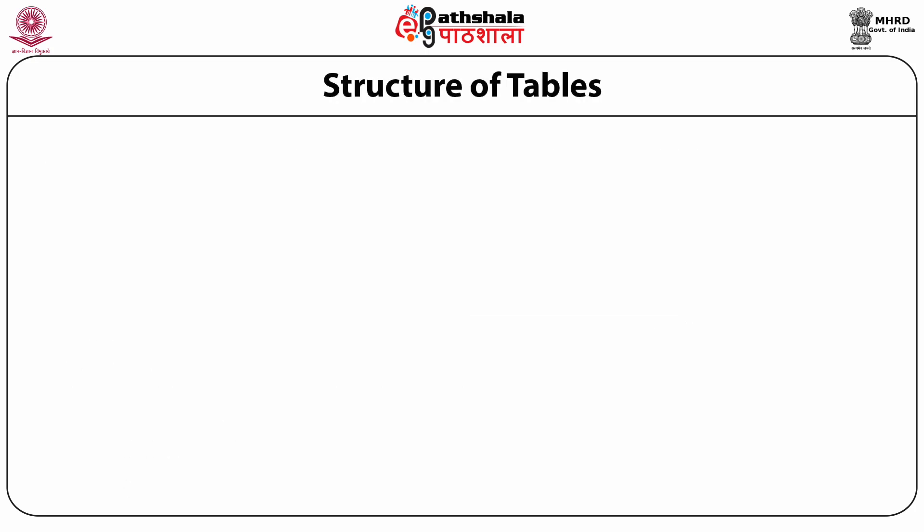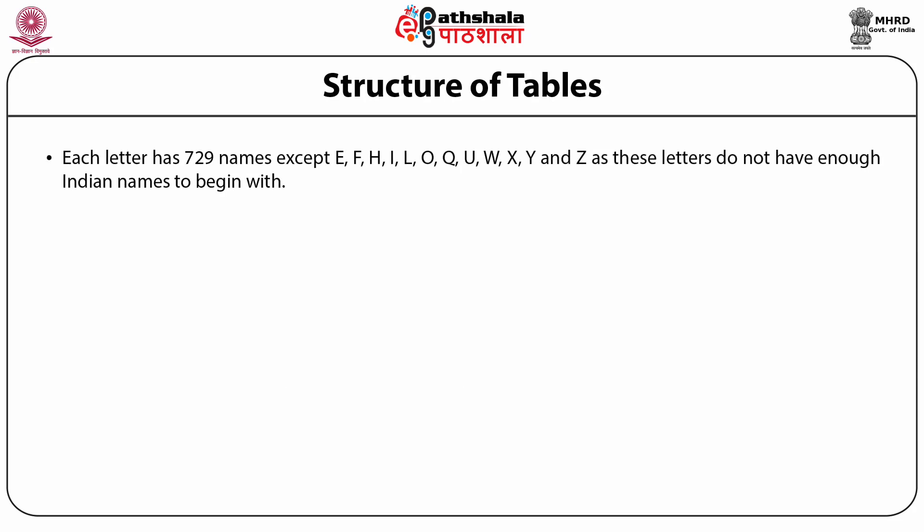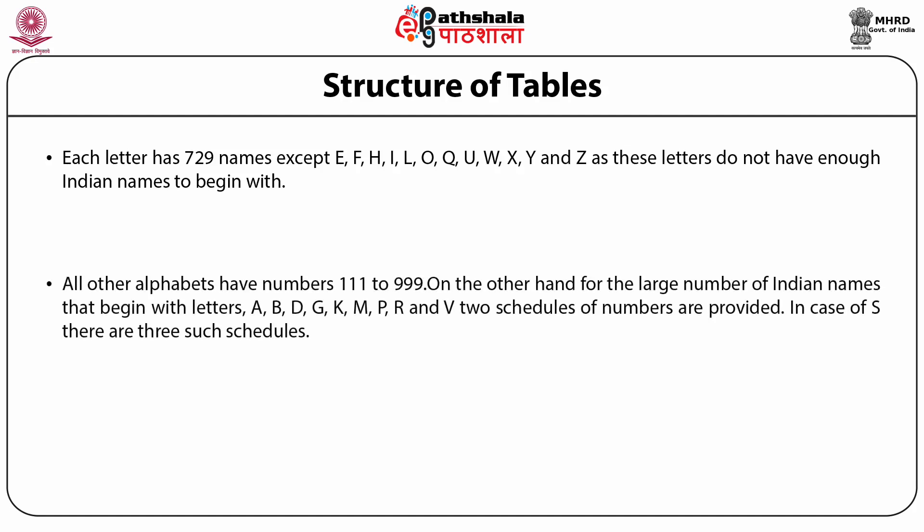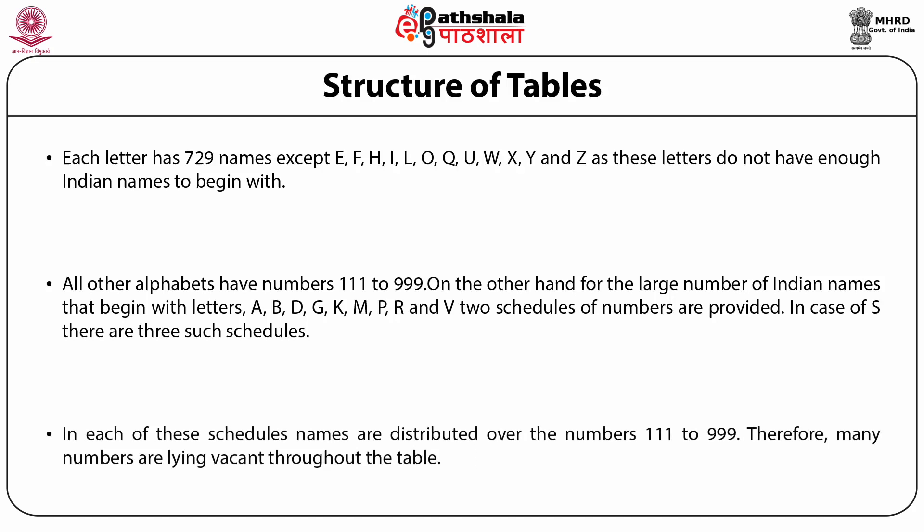Each letter of the alphabet has 729 names, except the letters E, F, H, I, L, O, Q, U, W, X, Y, and Z, as these letters do not have enough Indian names to begin with. All other alphabets have numbers 111 to 999. For the large number of Indian names beginning with A, B, D, G, K, M, P, R, and V, two schedules of numbers are provided. In case of S, which is the largest, there are three such tables. In each schedule, names are distributed over the numbers 111 to 999. Therefore, many numbers are lying vacant throughout the table, which can be filled in future with new names.